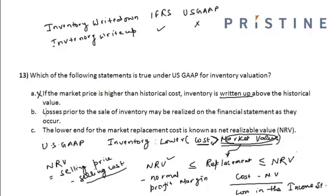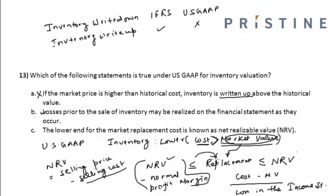Looking at option 2: losses prior to the sale of the inventory may be recognized on the financial statements as they occur. This option is true, as we already discussed regarding inventory write-down. The lower bound of the replacement cost range is net realizable value minus normal profit margin, so option 3 is incorrect. Therefore, option B is correct.